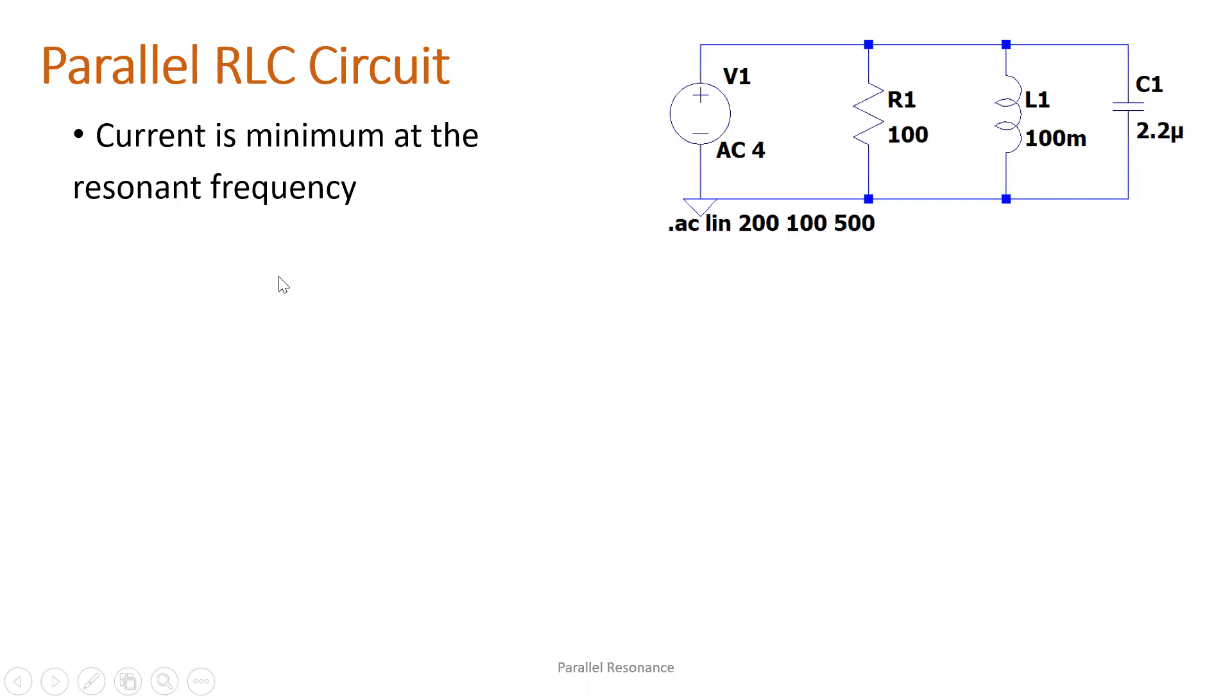First, let's solve for the resonant frequency. So substituting, we have the same, right? Because we have the same values for the inductance and capacitance previously in series resonance. That's why we still have the same resonant frequency here. The components we're going to use are L and C, inductance, capacitance. So still, we have the same values, same resonance frequency.